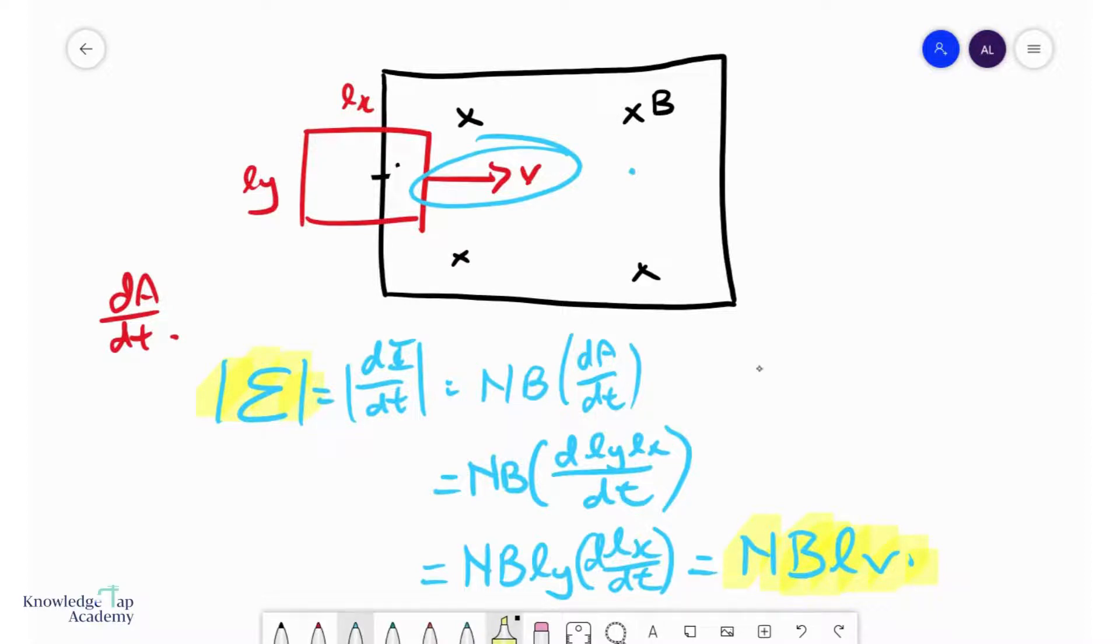And we can do a simple application of Lenz's law. And so, as the coil enters, notice the coil is moving to the right. And so, the induced current will try to oppose that.